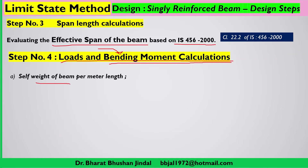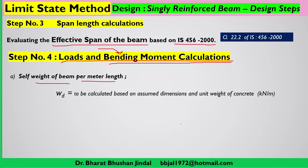The first load to consider is the self-weight of the beam, also termed dead load. Based on the assumed dimensions and unit weight of concrete, calculate the self-weight per meter length, which gives a uniformly distributed load (UDL) w_dd in kilonewtons per meter. Any other dead loads or fixed loads should be included in the UDL, or if there are concentrated loads, find the maximum bending moment accordingly.